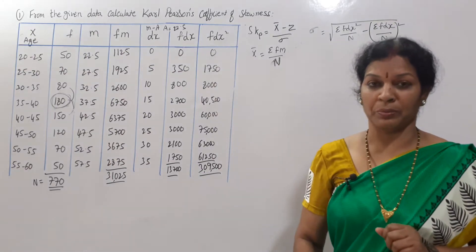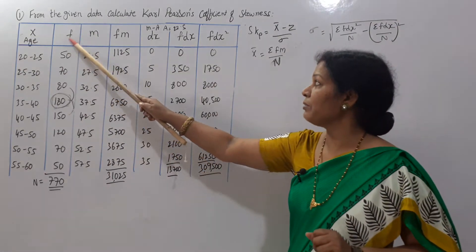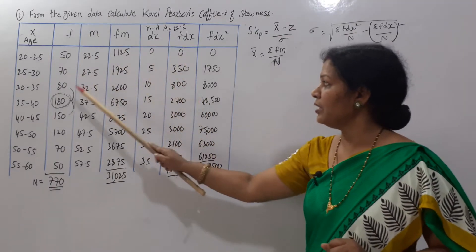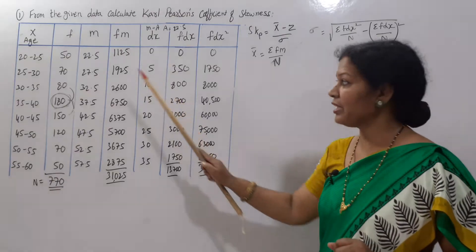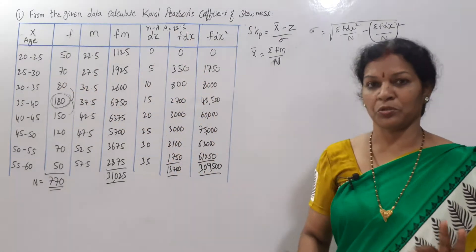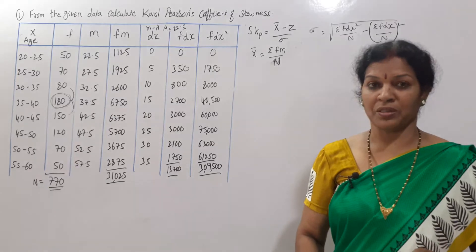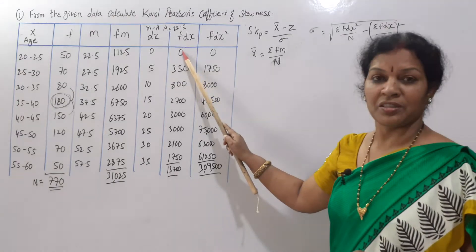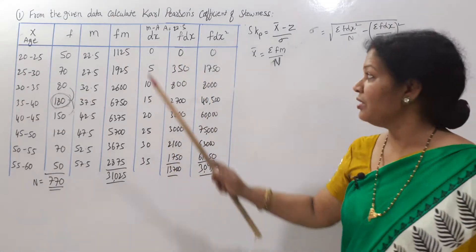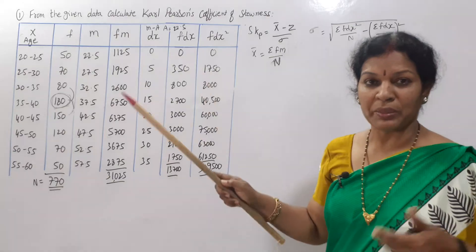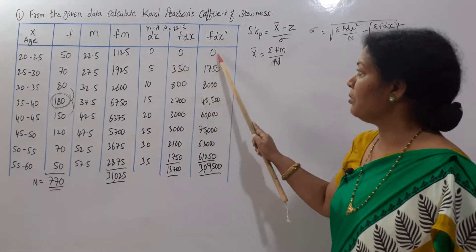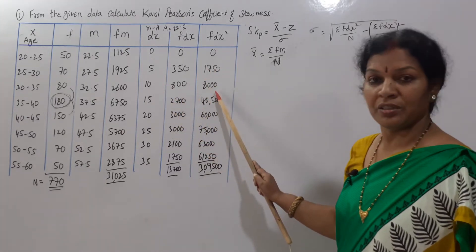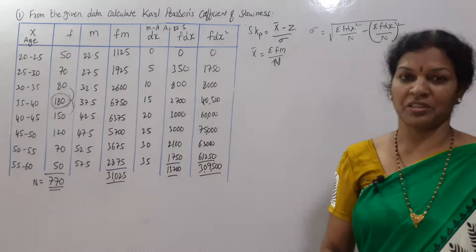We add a Fdx column: frequency multiplied by dx. 15 × 0 = 0, 70 × 5 = 350, 80 × 10 = 800. Then we compute Fdx² by multiplying dx by Fdx: 0 × 0 = 0, 5 × 350 = 1750, 10 × 800 = 8000.